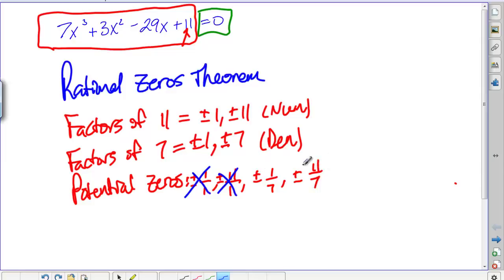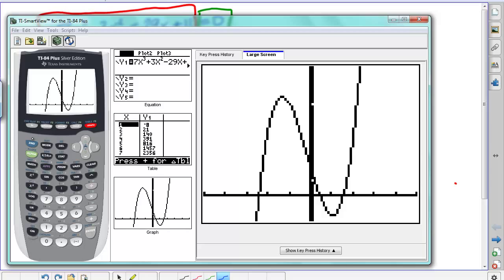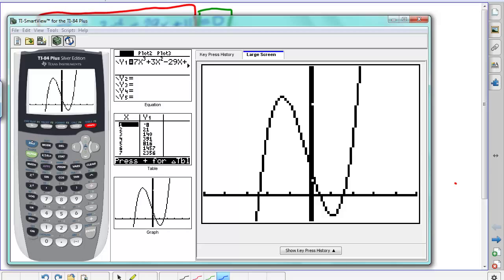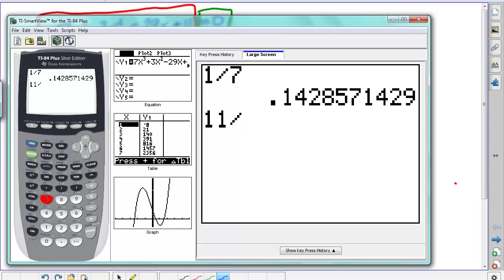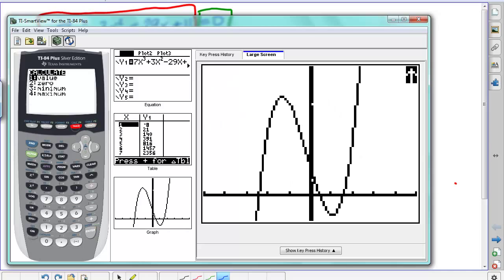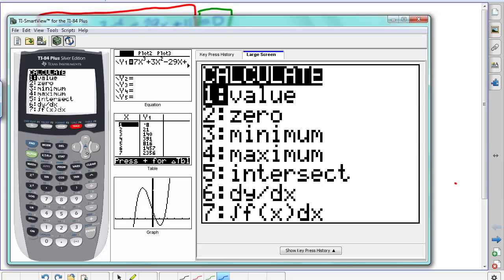So one thing you can do here is, if you actually divide out, 1 over 7 and 11 over 7, these are gonna be fractional values, decimal values. We get 0.14 and 1.57, and you can actually go to your graph and calculate these zeros.